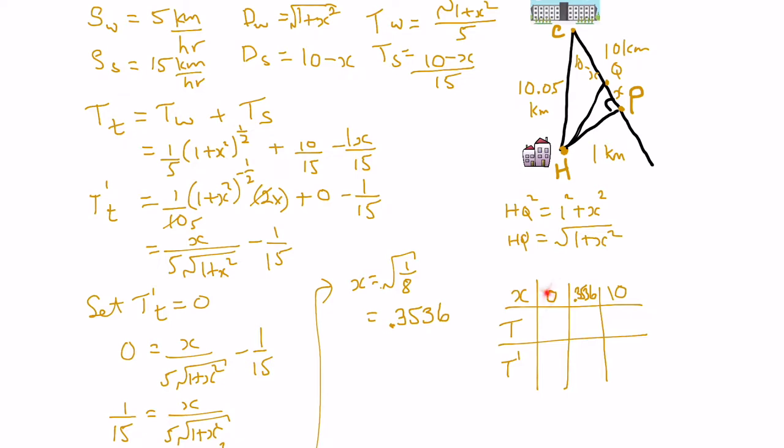So if x was 0, we could plug that into our time function here. We would get 0 squared plus 1 is 1, square root of 1 is 1, times 1/5 is 1/5, plus 10 over 15, minus that would be 0, so it would be 1/5 plus 10 over 15, which would be 3/15 plus 10/15, or 13 over 15.